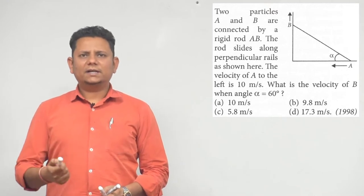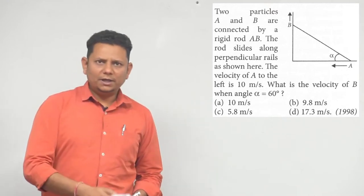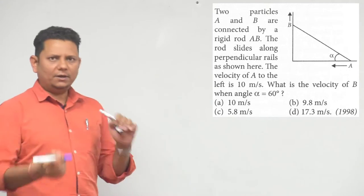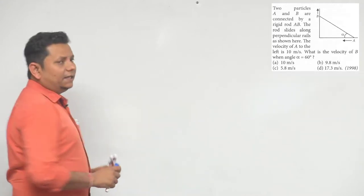Options are 10 m/s, 9.8 m/s, 5.8 m/s, and 17.3 m/s. Now, this question is constraint motion.